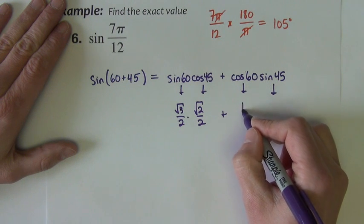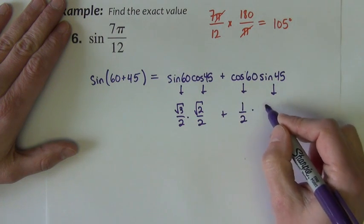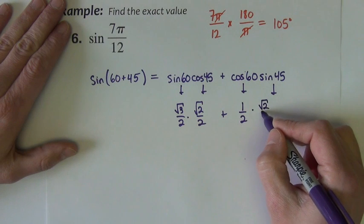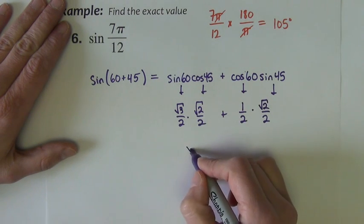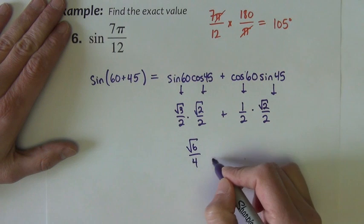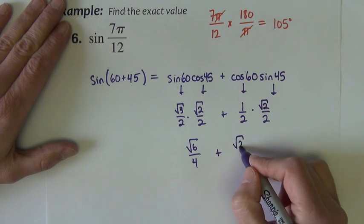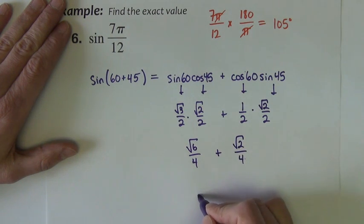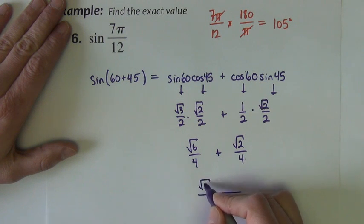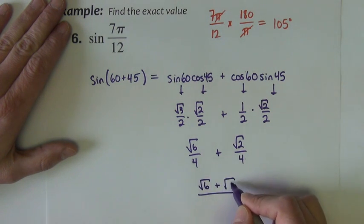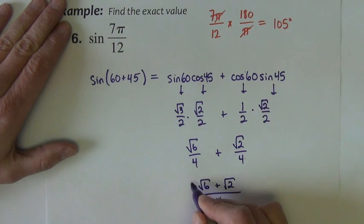Cosine 60 is 1 half sine 45 square root of 2 over 2, multiply together, we get square root of 6 over 4 plus square root of 2 over 4, combine to one fraction square root of 6 plus square root of 2 over 4.